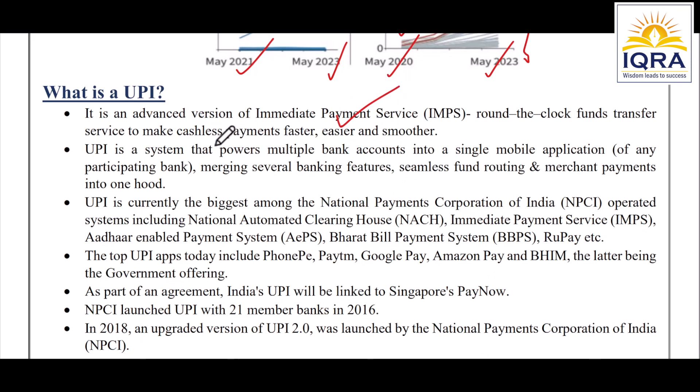UPI enables fund transfer, cashless payment — it's faster, easy, and a smooth payment service available on any Android phone. On the UPI system, you can manage multiple bank accounts on a single mobile application. Several banking features and accounts are merged into one. There is also seamless fund routing and merchant payments all available in one app.